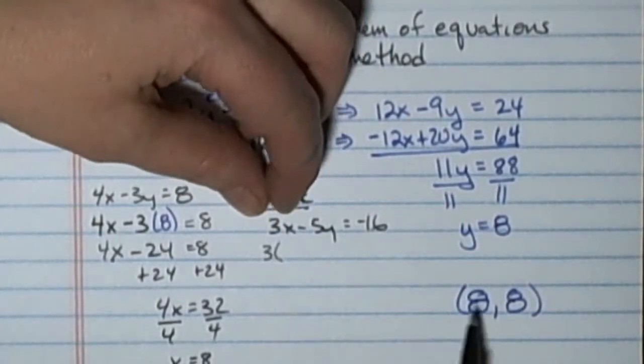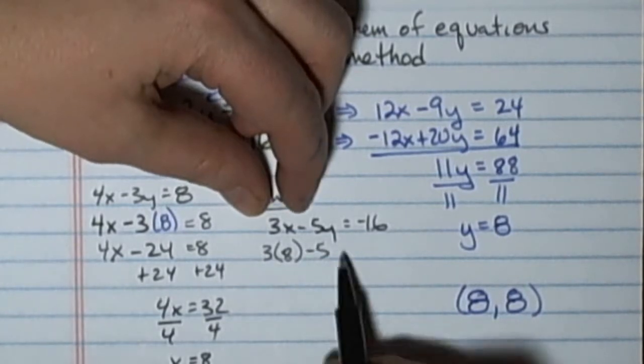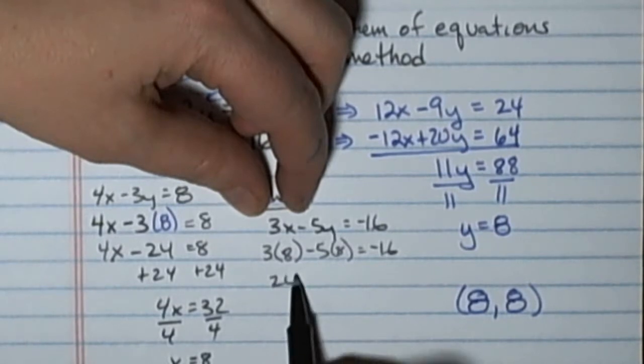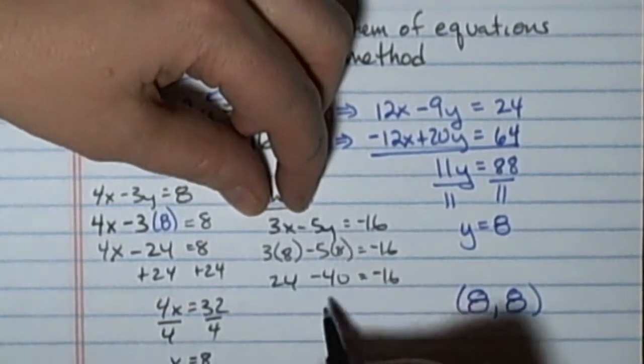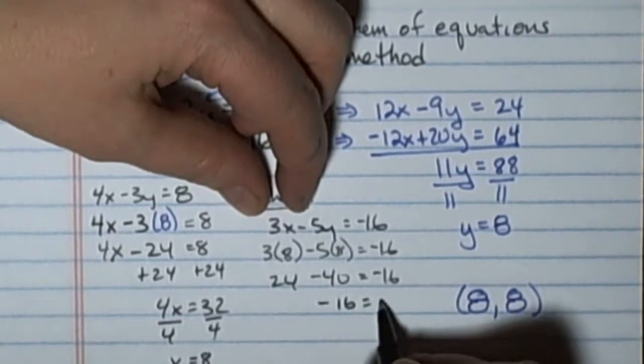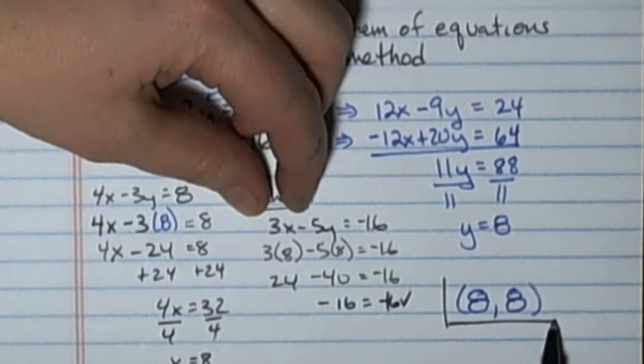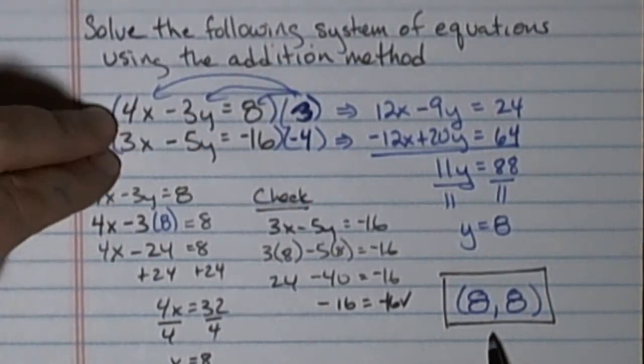So I have 3 times 8 minus 5 times 8 equals negative 16, which is 24 minus 40, and 24 minus 40 is indeed negative 16. So my answer did check and I feel confident that that point is the solution to the system of equations.